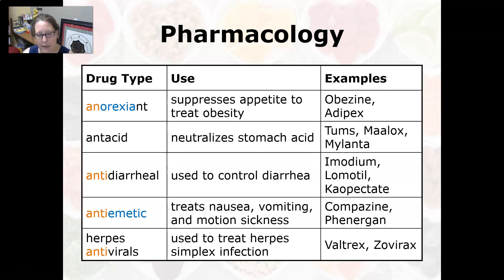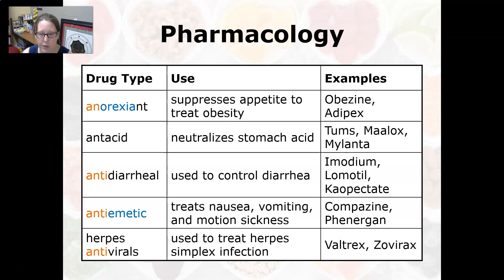An antiemetic treats nausea, vomiting, and motion sickness, such as Compazine or Phenergan. Herpes antivirals are used to treat herpes simplex infections, such as Valtrex and Zovirax.